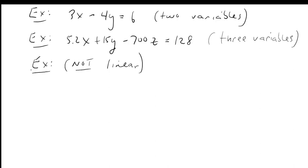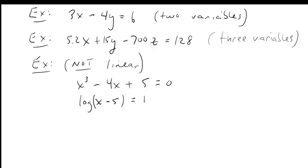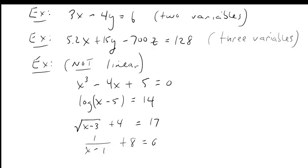Here's some examples of equations that aren't linear. For example, x cubed minus 4x plus 5 equals 0 — there's a cube in there, so that is not linear. Log of quantity x minus 5 equals 14 — not linear because there's a logarithm and the variable is inside the log. Variables inside the square root in the next example — not linear. And here the variable is in the denominator — also not linear.